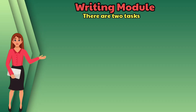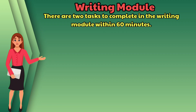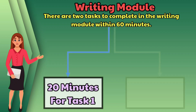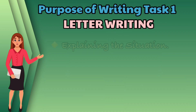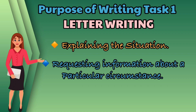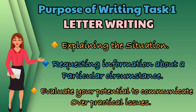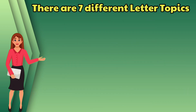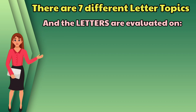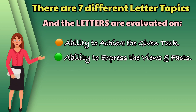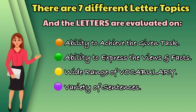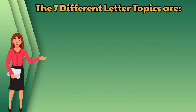There are two tasks to complete in the writing module within 60 minutes. It is advised to use 20 minutes for task 1 and 40 minutes for task 2. In task 1, you have to write a letter explaining the situation or requesting information about a particular circumstance. This task is given to evaluate your potential to communicate over practical issues. The letter will be evaluated on the basis of your ability to achieve the given task, your ability to express views and facts with a wide range of vocabulary and a variety of sentences.